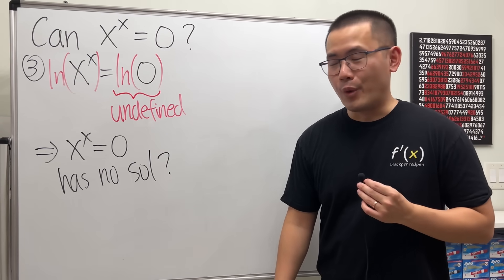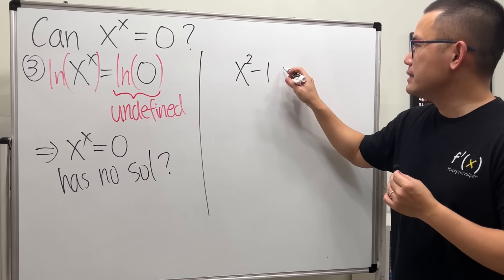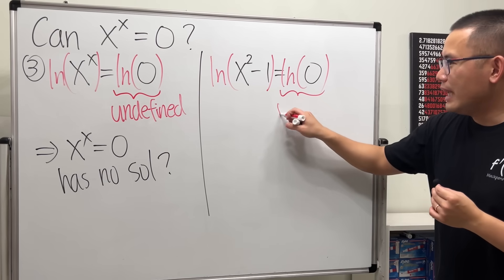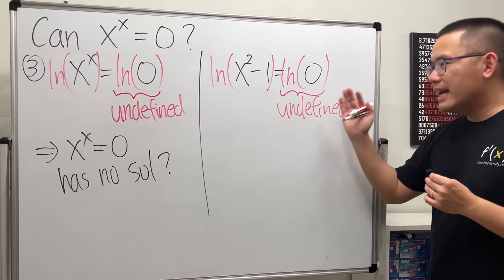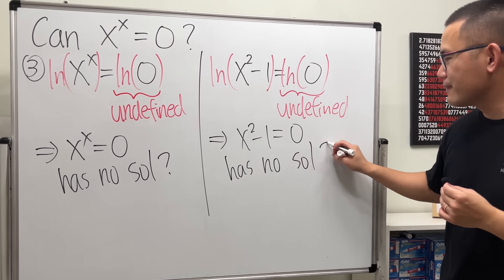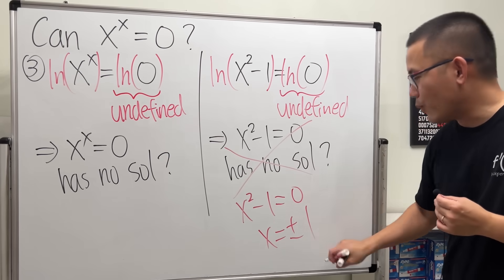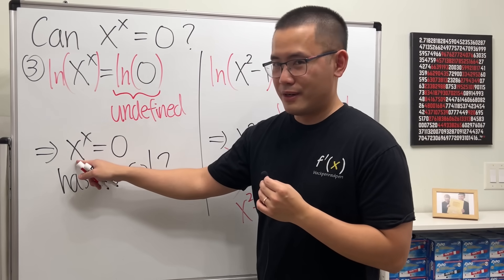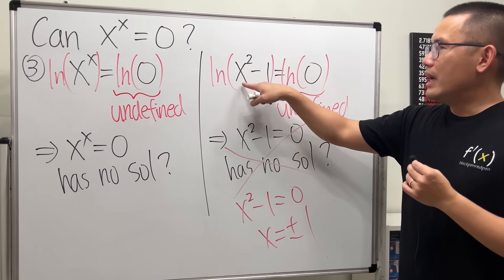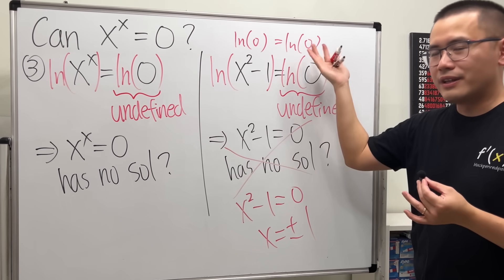But I don't really like this reasoning. For example, take x squared minus one equals zero. If we take the natural log on both sides, we get ln of zero, which is undefined — and you might say it has no solution. But of course that's wrong, because x squared minus one equals zero has solutions x equals plus or minus one. So just because ln of zero appears doesn't mean the equation has no solution. Maybe there is some number raised to itself that gives zero — we just don't know what it is.